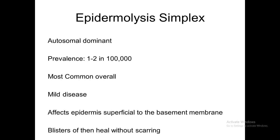Epidermolysis bullosa simplex is autosomal dominant. The prevalence is 1 to 2 in 100,000, and it is the most common among this group. Fortunately, it is a mild disease, because the level of blister formation is very superficial and it heals without scarring.